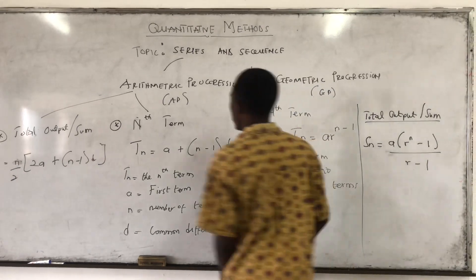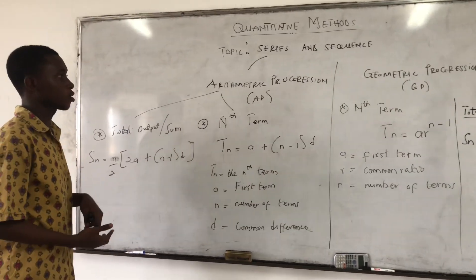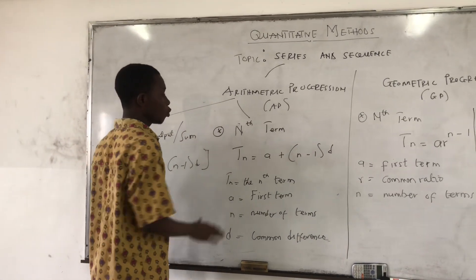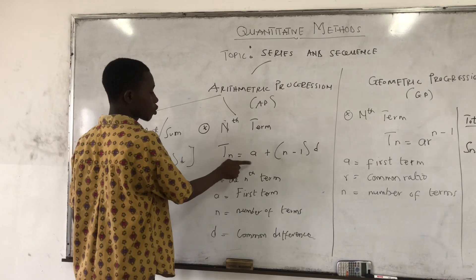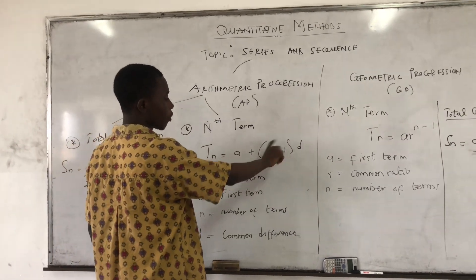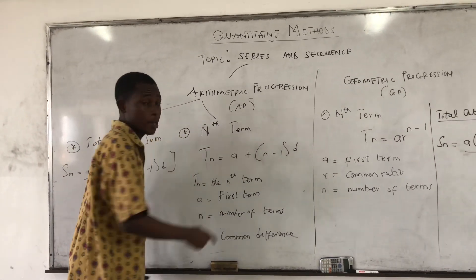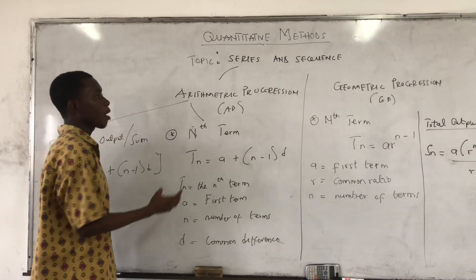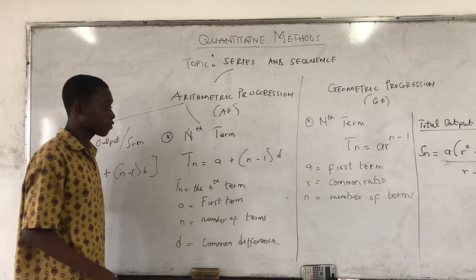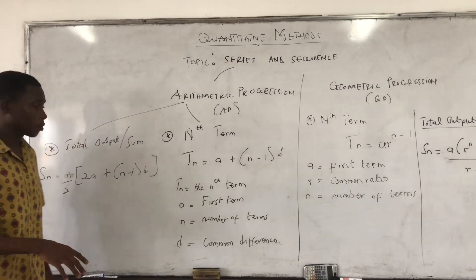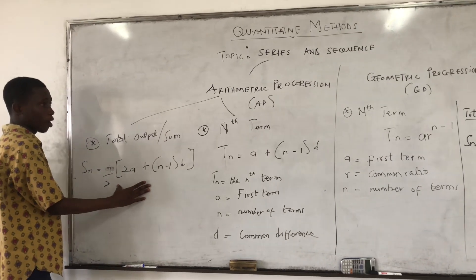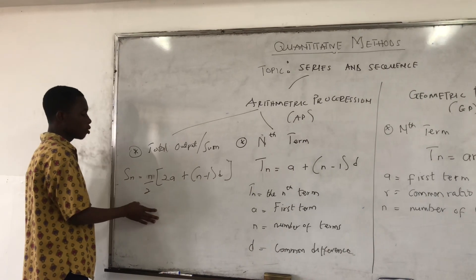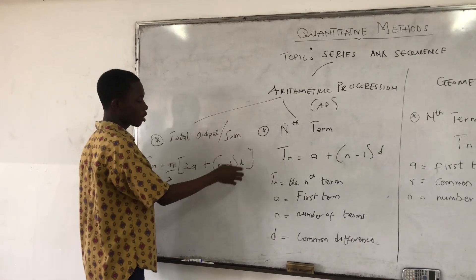Let me place more emphasis. With arithmetic progression, when you are asked to calculate the nth term, use the formula: TN = A + (N - 1)D, where A is the first term, D is the common difference, and N is the number of terms. For the sum of an arithmetic progression: SN = N/2 × [2A + (N - 1)D].